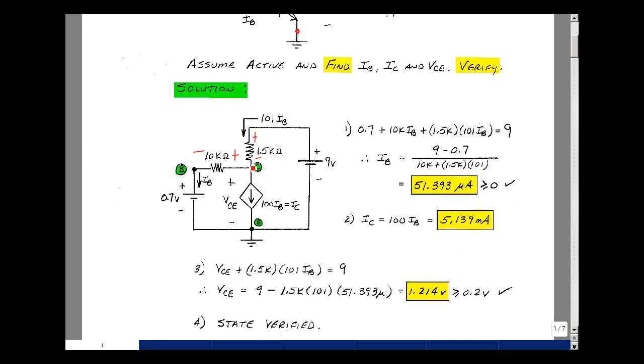The rise in voltage is VCE. The rise in voltage is 1.5K times 101 IB. And then the drop is equal to 9. Solving for this, I have 9 minus 1.5K times 101 I sub B. But I sub B was 51.393 microamps. That gives me 1.214. Is that greater than 0.2? Yes, so that checks.